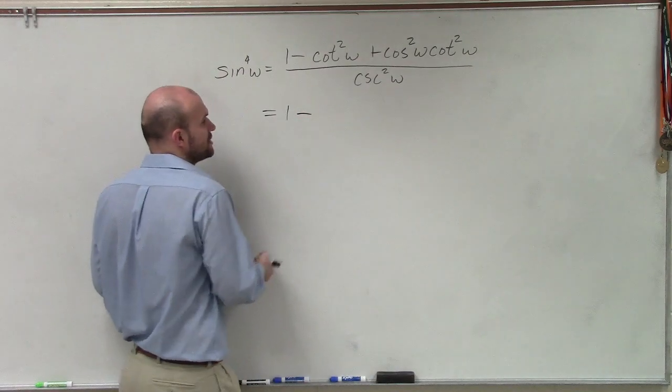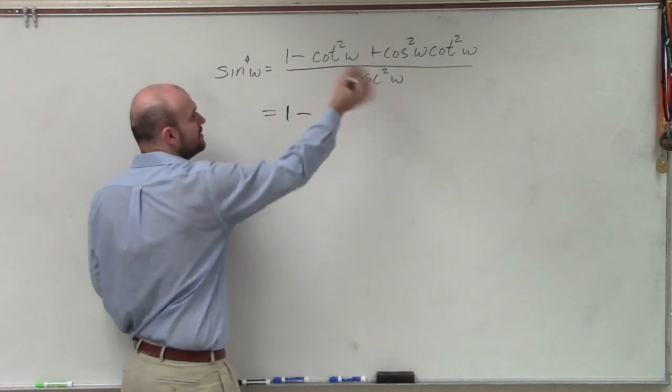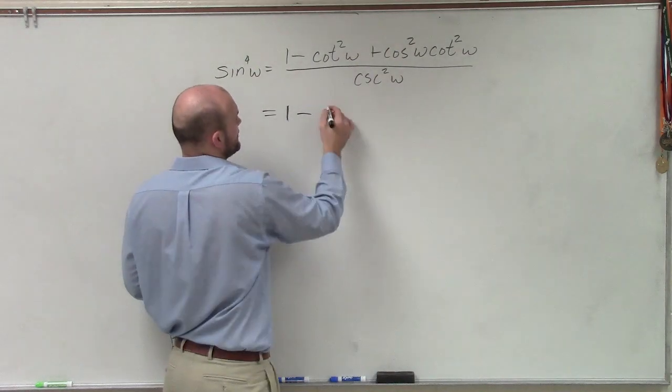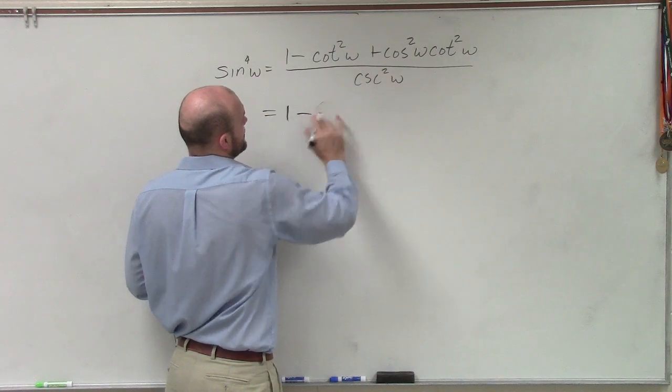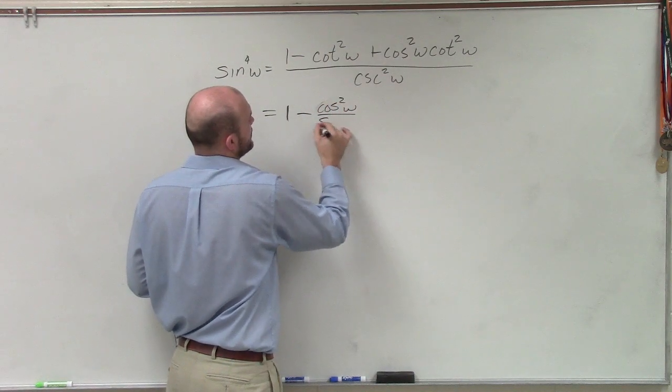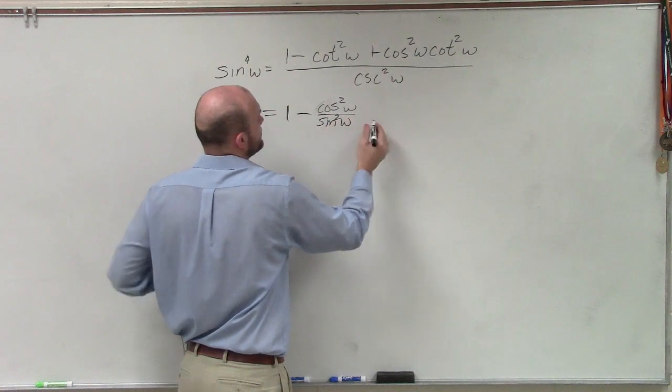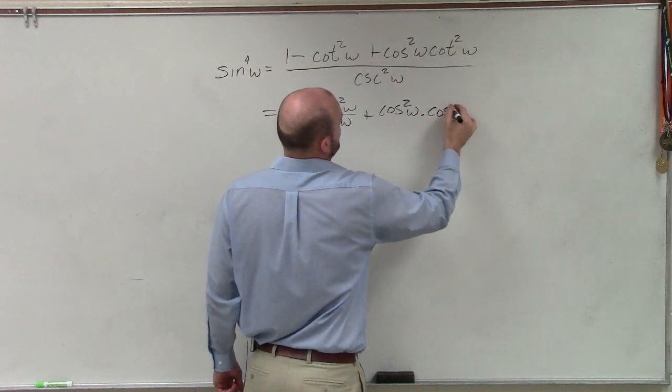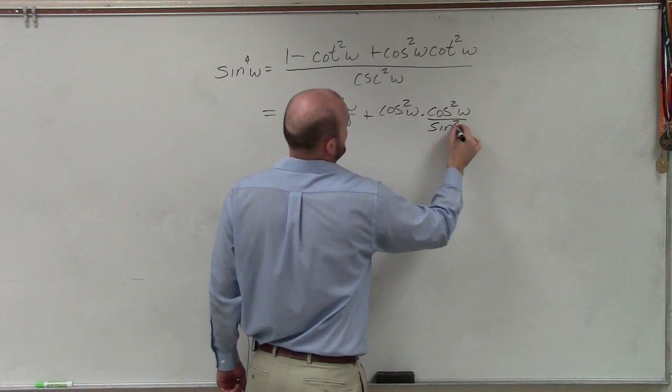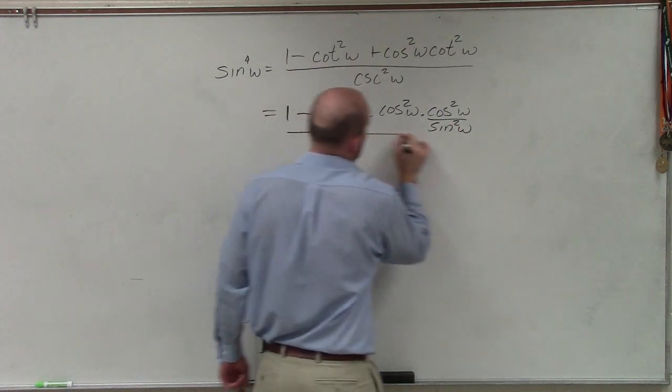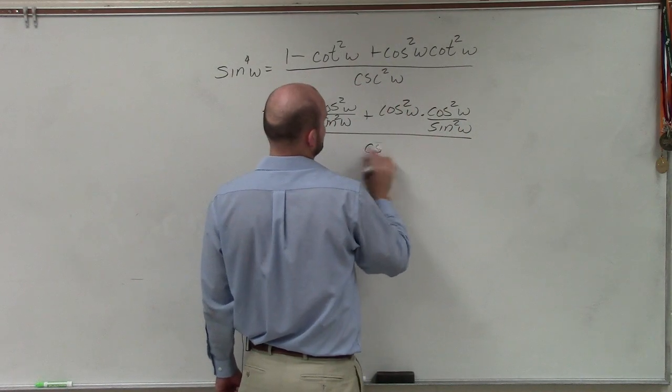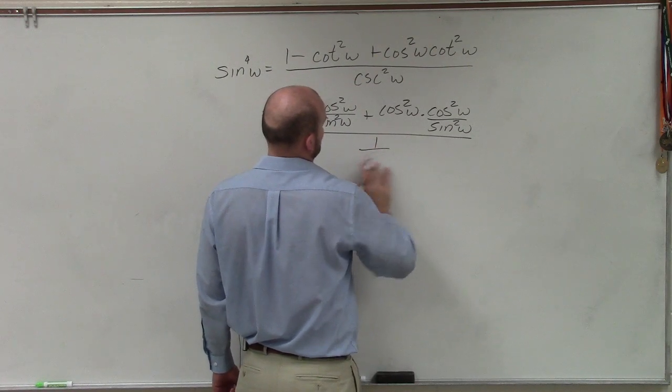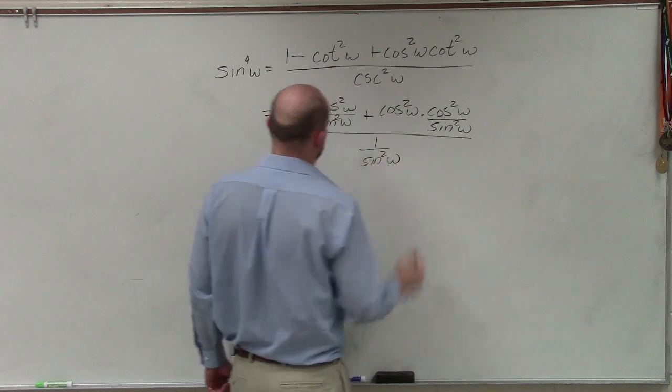I converted all of my terms to sines and cosines, because after trying by using some Pythagorean identities, this is making this much worse than I want to deal with. So therefore, this becomes cosine squared of w over sine squared of w plus cosine squared of w times cosine squared of w over sine squared of w all over 1 divided by sine squared of w.